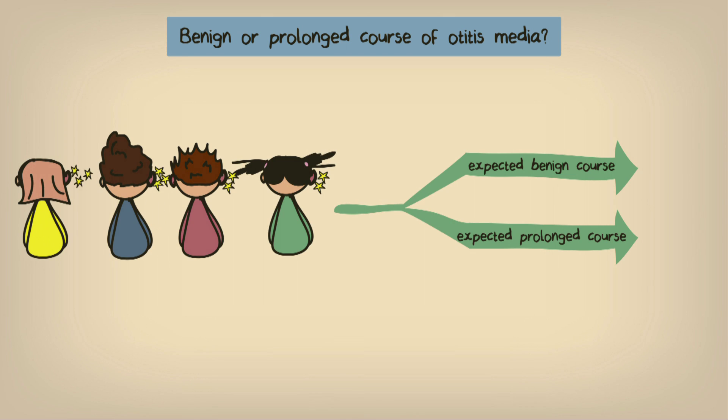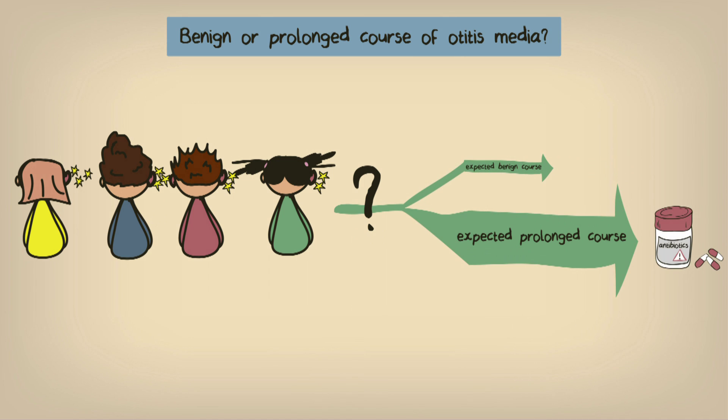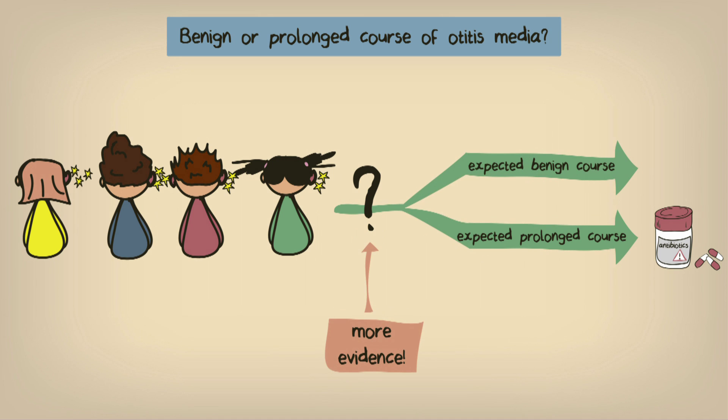Well, on the face of it, it isn't always especially clear. It's this difficulty that has potentially led to a huge level of overprescription of antibiotics to children. To solve this problem, we need more evidence. And to acquire this evidence, we need to conduct a prognostic study.